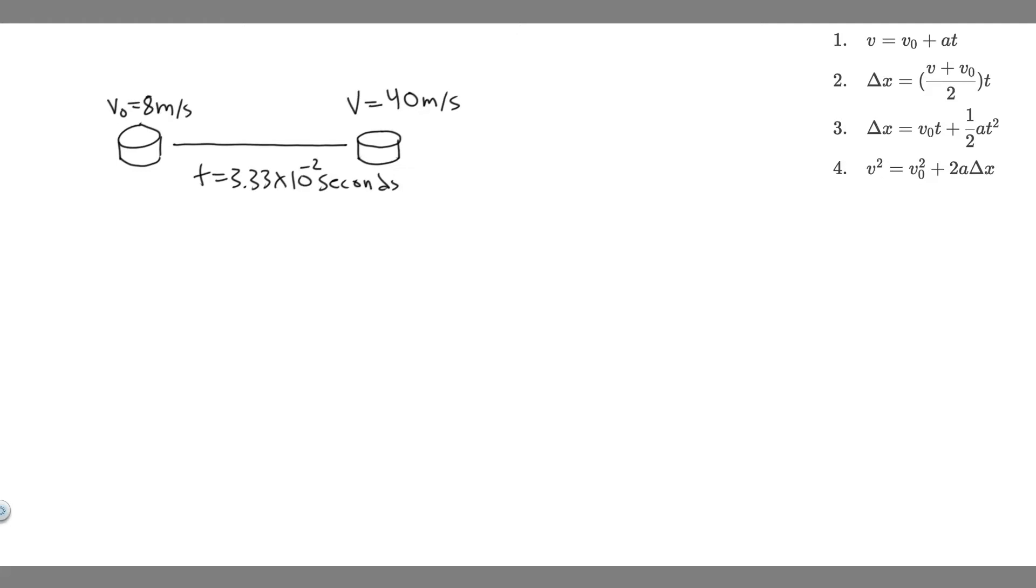In this problem, we're told in a slap shot, a hockey player accelerates the puck from a velocity of 8 meters per second to 40 meters per second in the same direction. If this shot takes 3.33 times 10 to the minus 2 seconds, calculate the distance over which the puck accelerates.